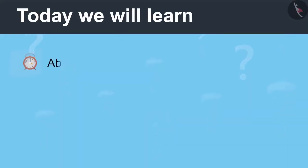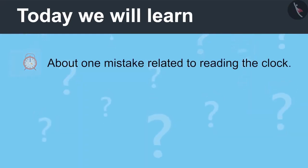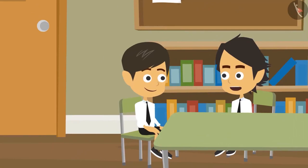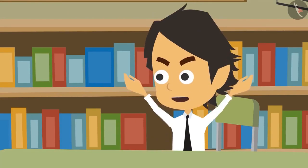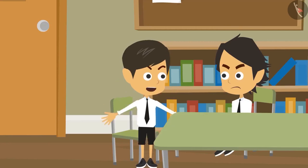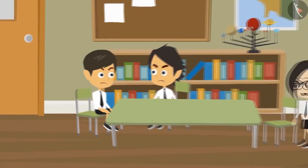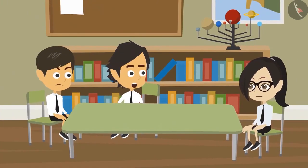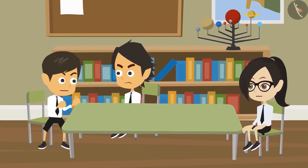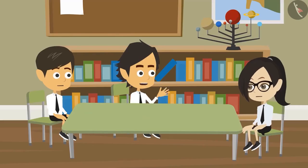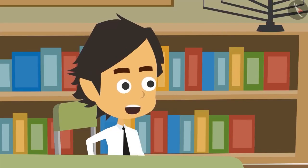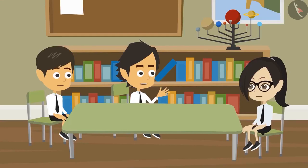Today we will learn about one mistake related to reading the clock. From home, I reach school in 2 minutes. No, it takes 10 minutes — we both reach at the same time. Then how does it take you only 2 minutes? I leave my home at 9 o'clock and I reach here at 2 minutes past 9 o'clock, so is it not 2 minutes?